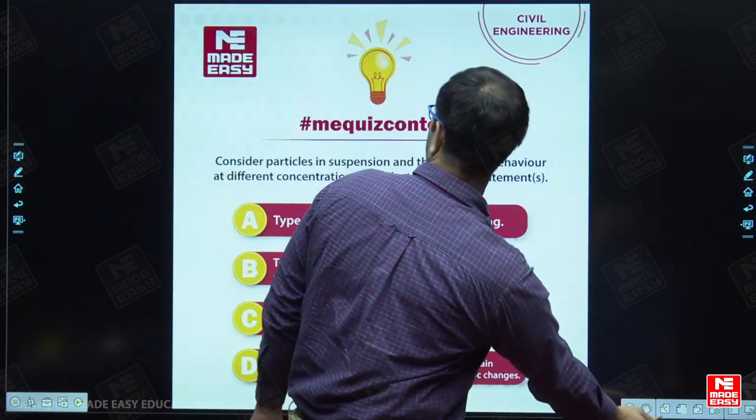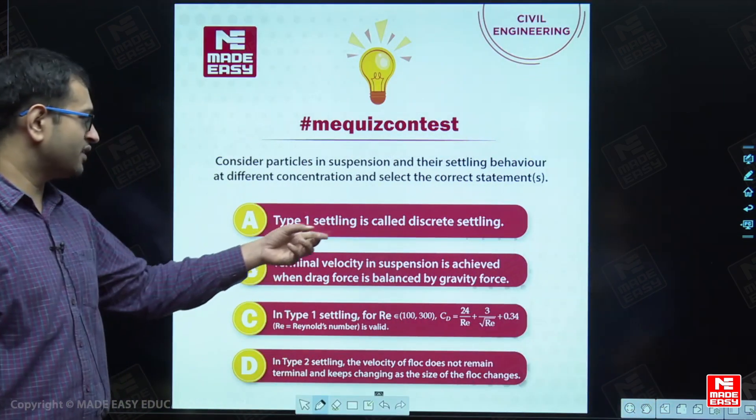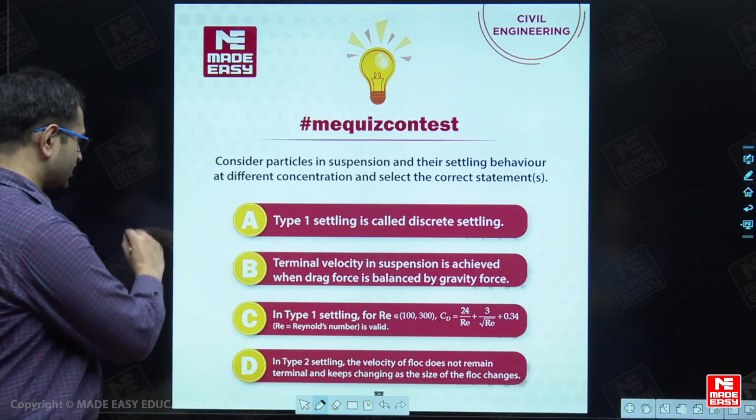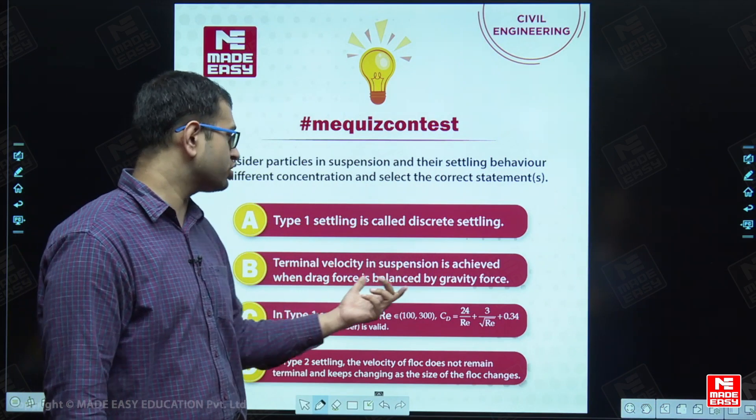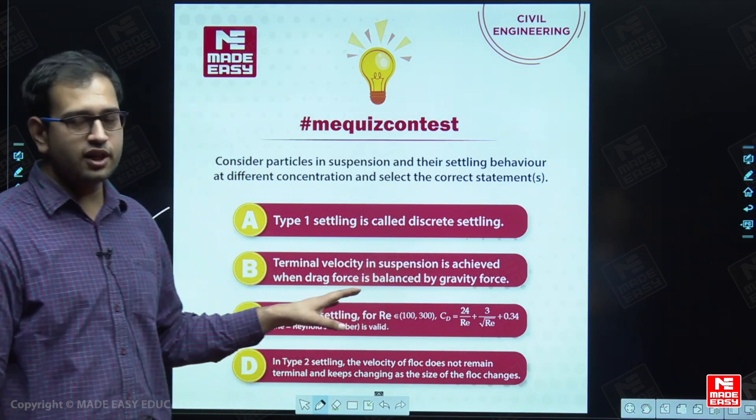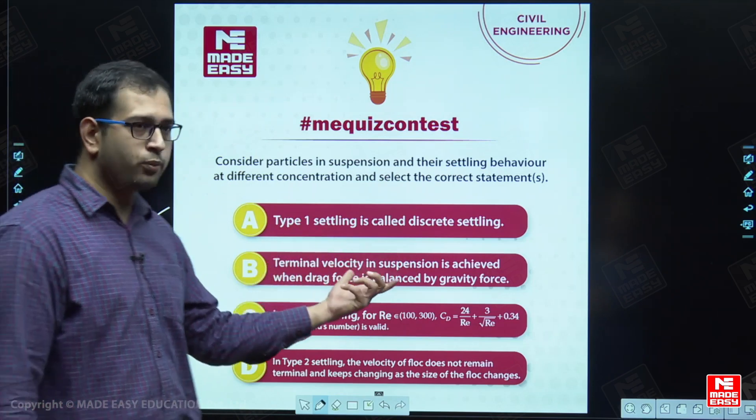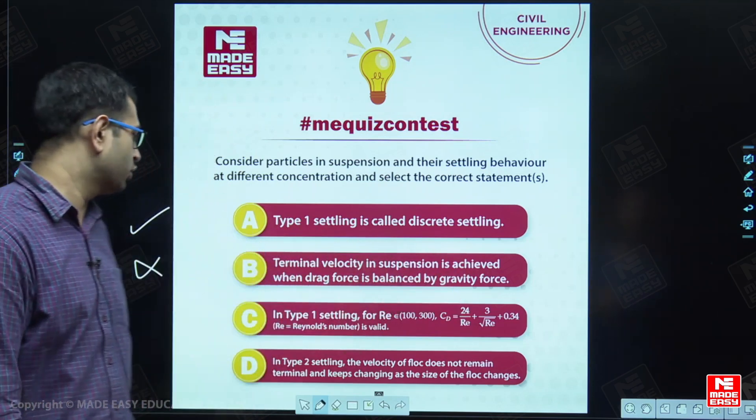We can now clearly see that the type 1 settling is called discrete settling, which is correct. And terminal velocity in suspension is achieved when drag force is balanced by gravity force. This is clearly wrong, as the drag force plus buoyant force are balanced by the gravity force.